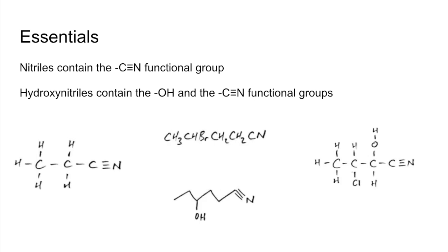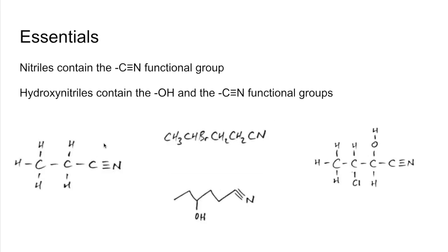There are four structures on the screen now — pause the video if you want to have a go at naming those, then play when you're ready. Starting with the first one: the important thing to realise is we've actually got three carbons in the molecule. Students often just count two and forget about the one in the functional group. So this is called propanenitrile.